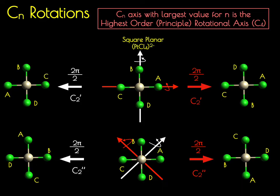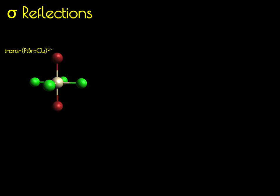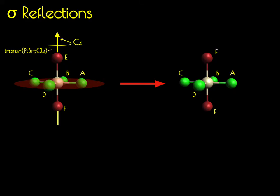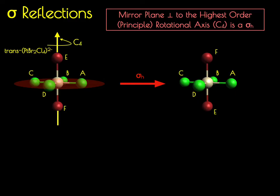Moving on from proper rotations, we're going to talk about reflections through a mirror plane — the sigma reflections. We're going to use the six-coordinate platinum species for this because it has axial bromines, so we can distinguish axial positions. I'll label the bromines E and F. It has an identical C4 rotational axis as the principal axis, and we can define a mirror plane perpendicular to that. This mirror plane reflects F and E with one another and keeps A, B, C, and D in the same plane, unmoved. Because it's perpendicular to the highest order C4 axis, it's a sigma H.